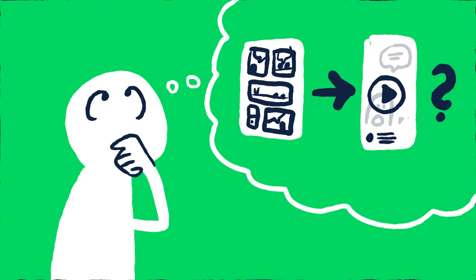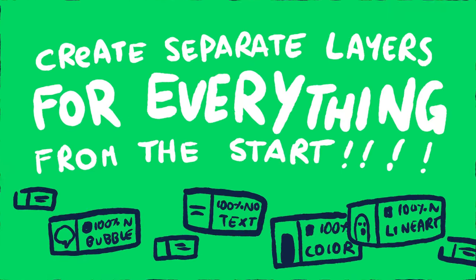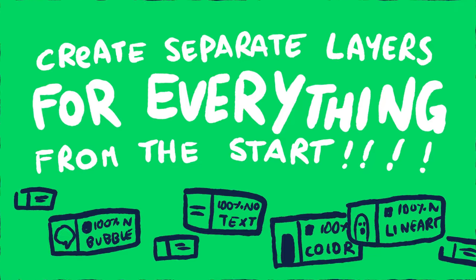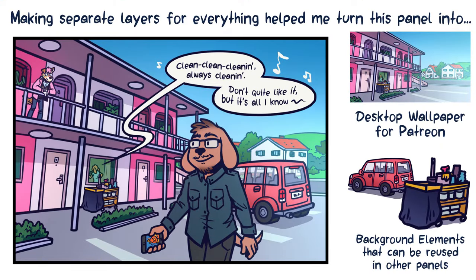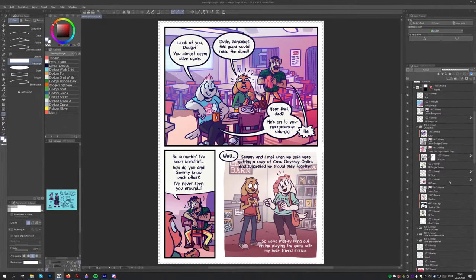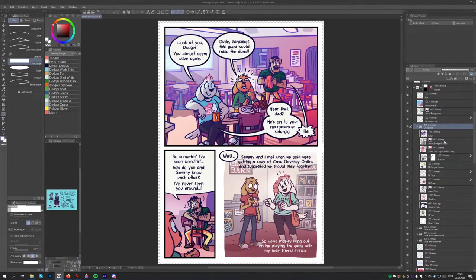With this in mind, here are some principles for working as flexible as possible. Number one: create separate layers for everything from the start. If you ever need to separate your character from your background for promotional artwork, or want to animate speech bubbles in a motion comic, this will help you save a lot of time compared to separating things and potentially having to redraw things later on. Since comic pages are complex, it's important to stay organized. Create folders and maybe even subfolders, and label your layers clearly.